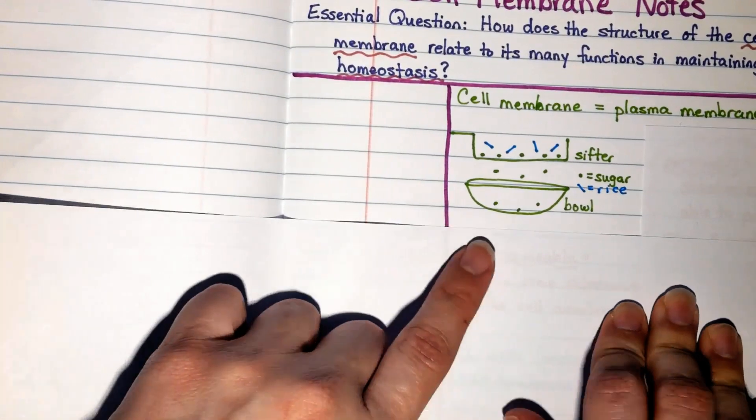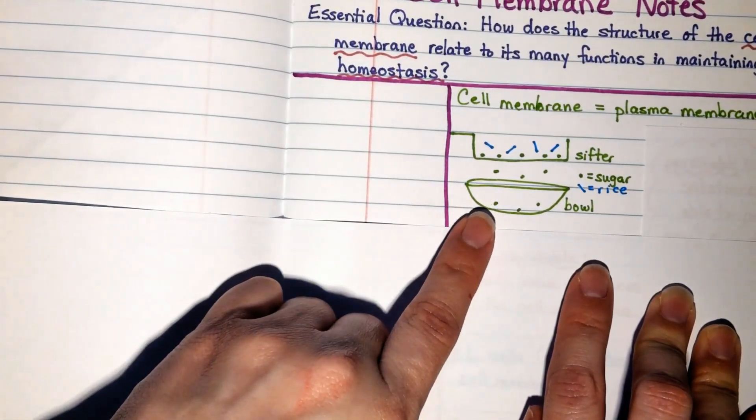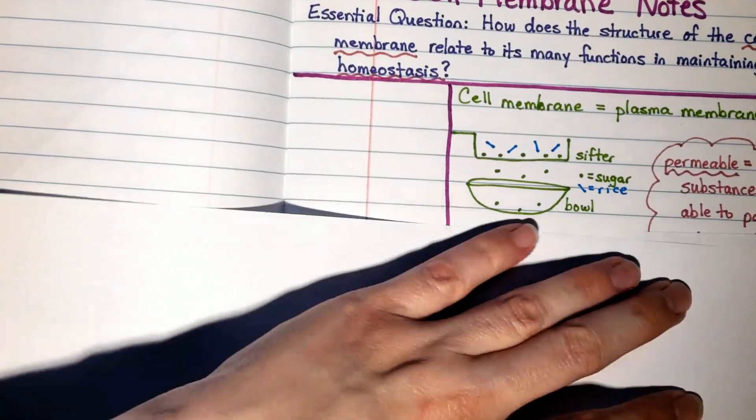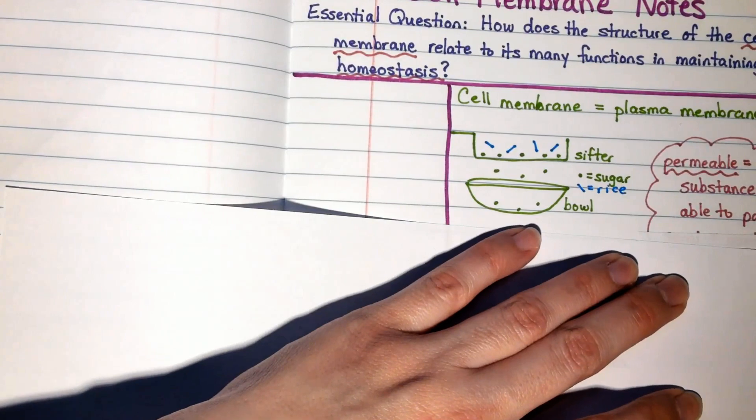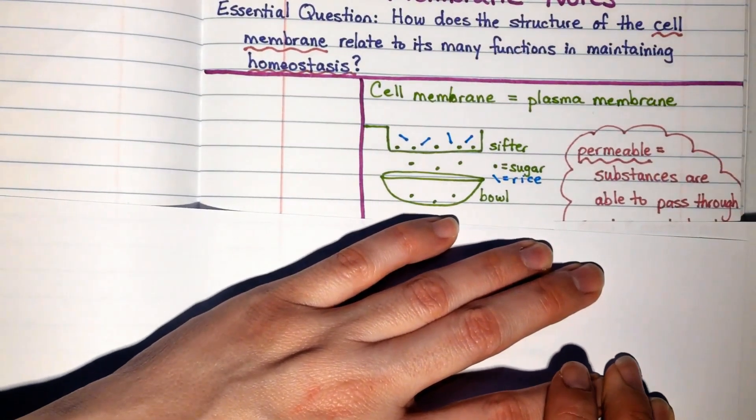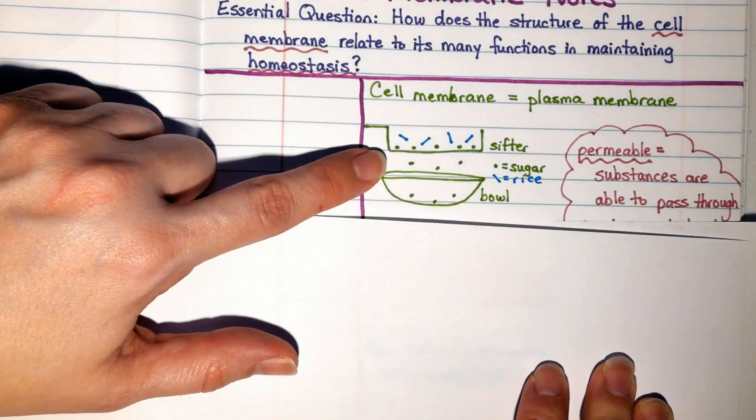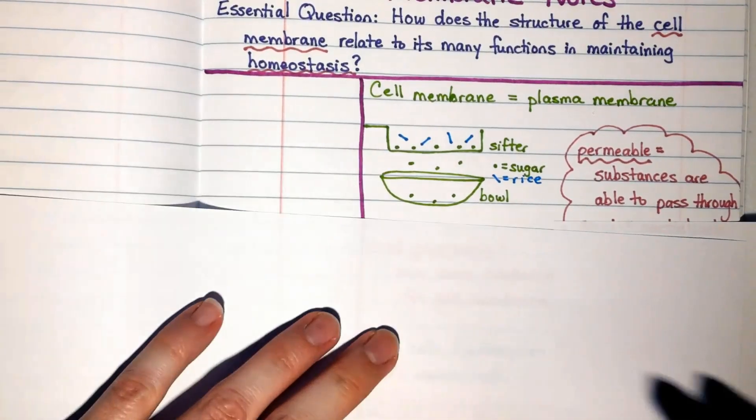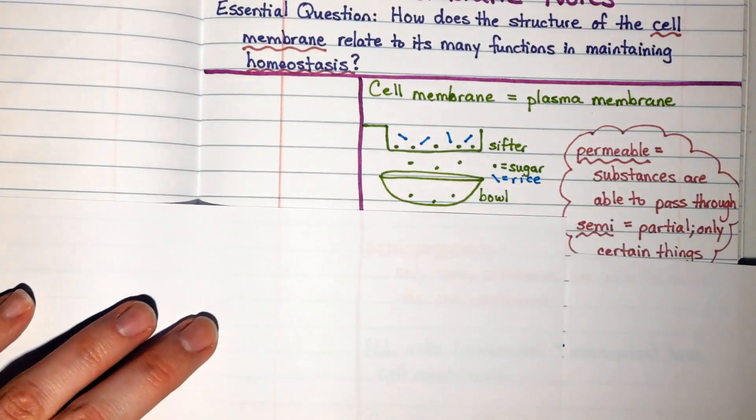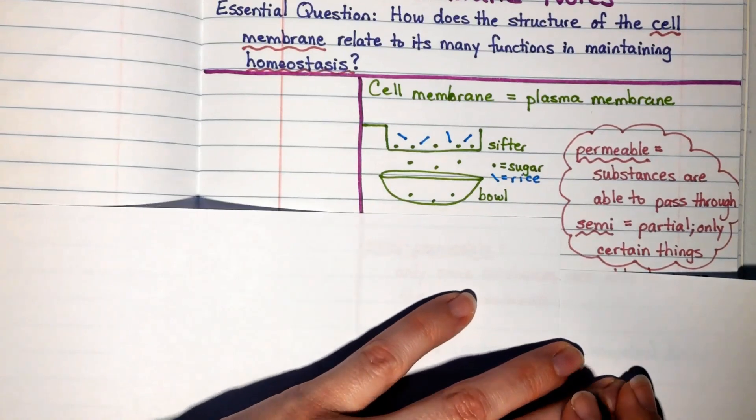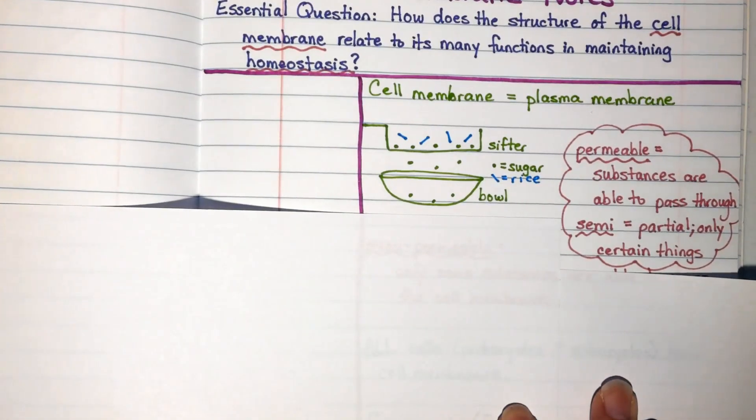When we have structures that allow some things to get through, we call those structures permeable. To be permeable means that substances are able to pass through. However, in the case of our sifter, only some substances got through, so that means that we can apply the term semi. And semi is a term that means partial. In other words, only certain things are possible in that particular situation.